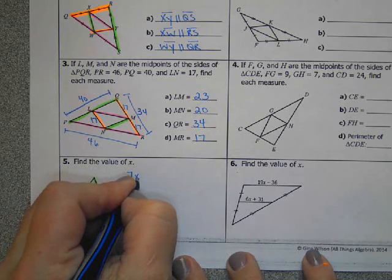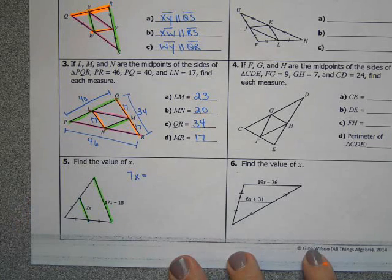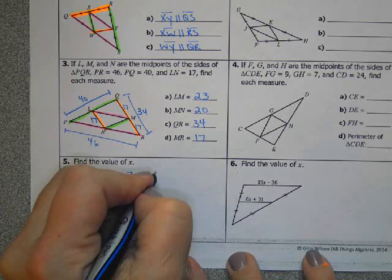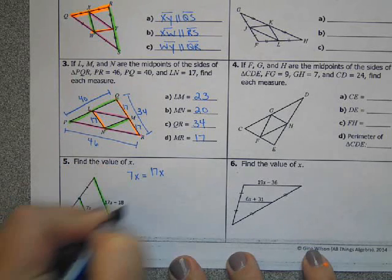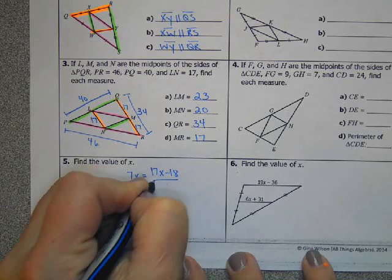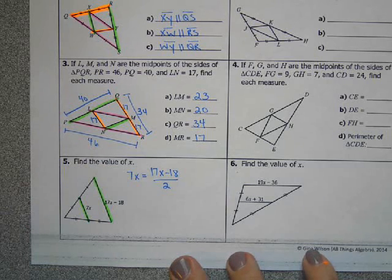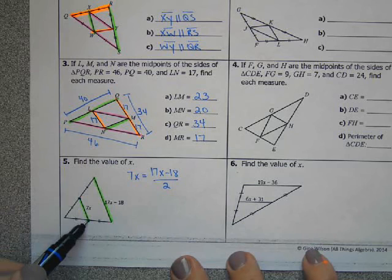So the midsegment is 7X, and that equals 17X minus 18 divided by 2. This is one way you can set it up. Or you know that it takes two of these to make this, so you can double the midsegment to get the other side.